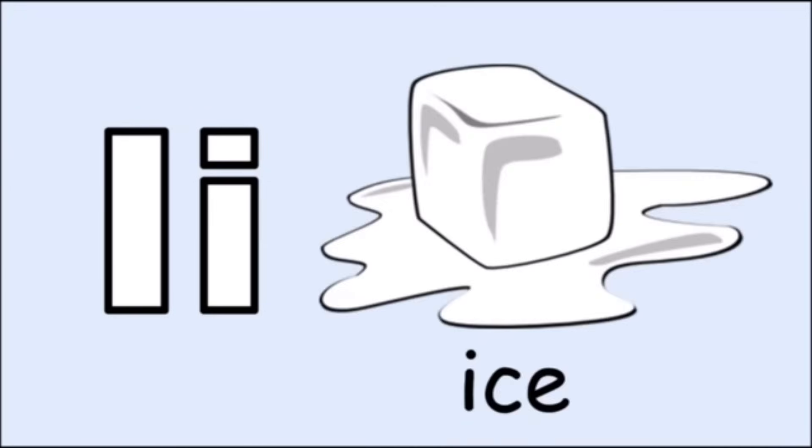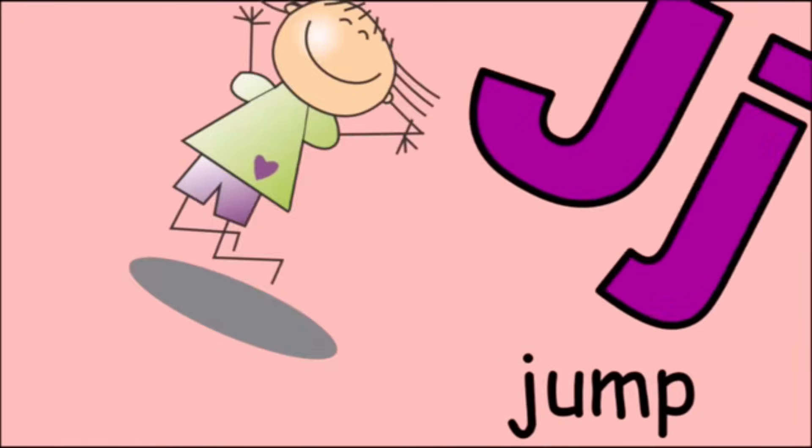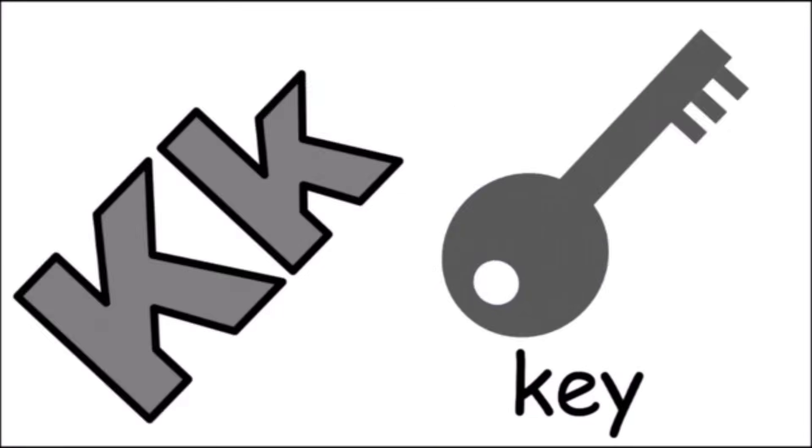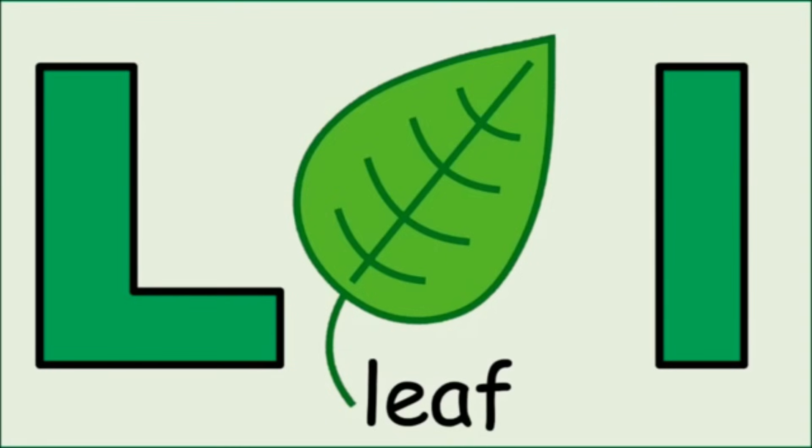I for ice, i, i, ice. J for jump, j, j, jump. K for key, k, k, key. L for leaf, l, l, leaf.